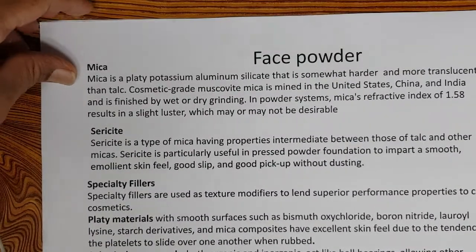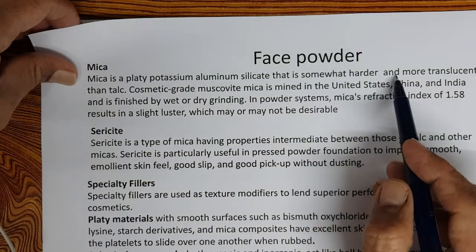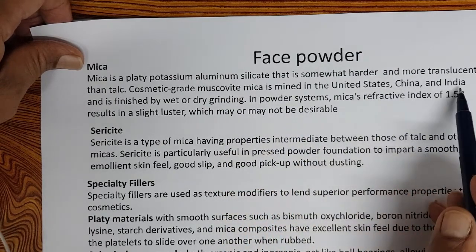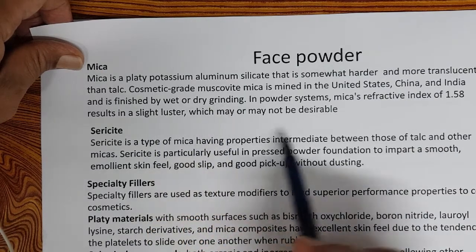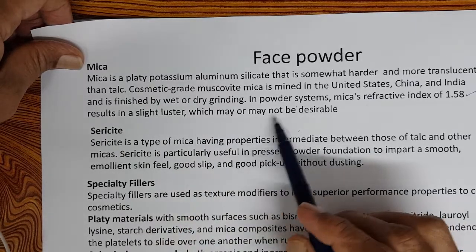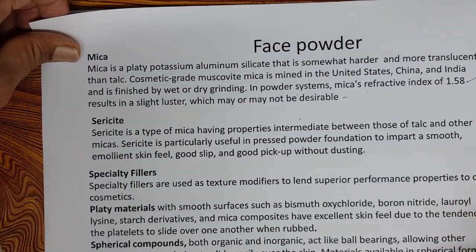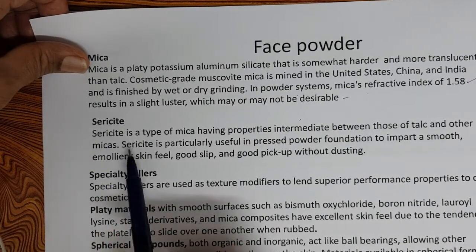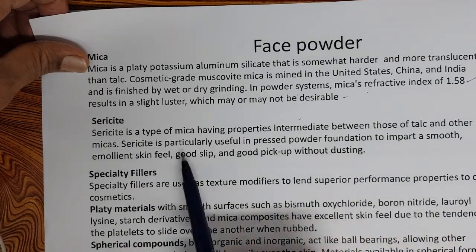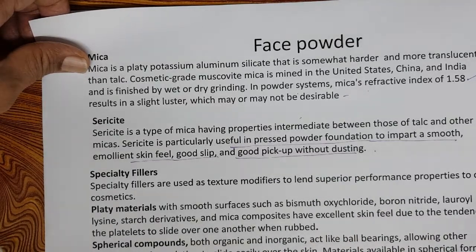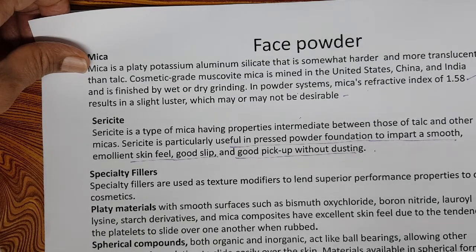Mica is a platy potassium aluminum silicate that is somewhat harder and more translucent than talc. Cosmetic grade muscovite mica is mined in the United States, China, and India, finished by wet or dry grinding. In powder systems, mica has a refractive index of 1.58 and results in slight luster, and it can be used along with titanium dioxide to give a good natural feel. Sericite is a type of mica particularly useful in pressed powder foundation to impart smooth emollient skin feel, good slip, and good pickup without dusting.